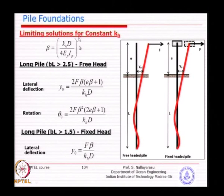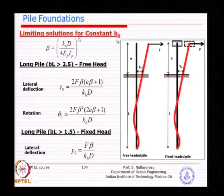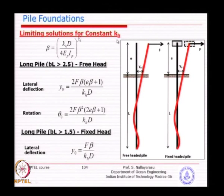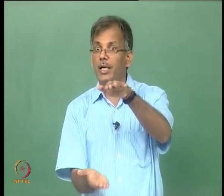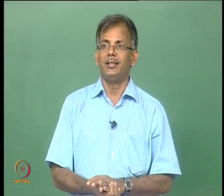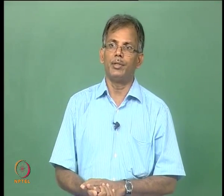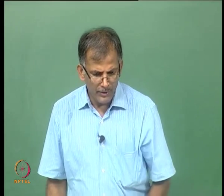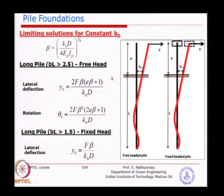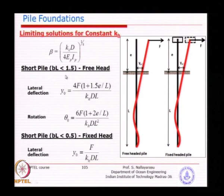For a different soil type where KH is varying - as in sandy material - it is not uniform. For single layer sandy soil, the pressure distribution is triangular because it increases with overburden pressure. In this case with free head and fixed head, long pile and short pile conditions, we use a parameter called lambda instead of beta. Lambda is related to eta H, the slope of the KH variation.